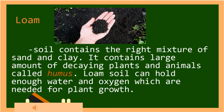The last type of soil is loam. Loam soil contains the right mixture of sand and clay. It contains a large amount of decaying plants and animals called humus. Loam soil can hold enough water and oxygen, which are needed for plant growth.